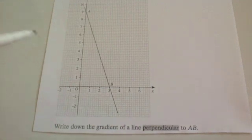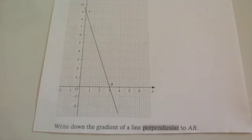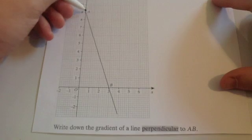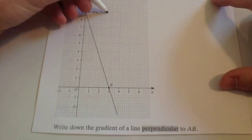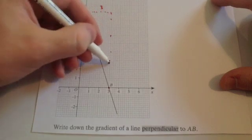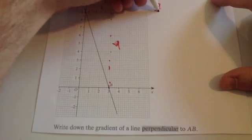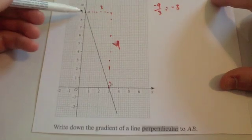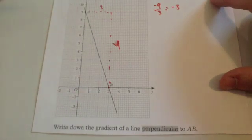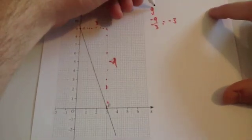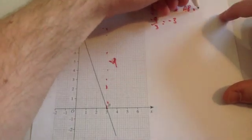Let's have a look at some exam questions. The first GCSE question says: write down the gradient of a line perpendicular to AB. First, you need to work out the gradient of line AB. Choosing two points and doing rise over run: the rise is minus nine and the run is three, so the gradient is minus nine divided by three. The gradient of AB is equal to minus three.